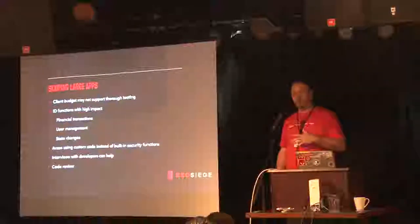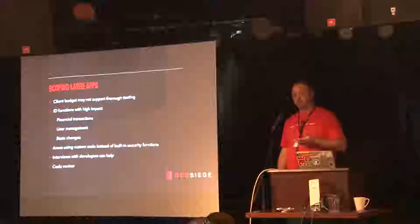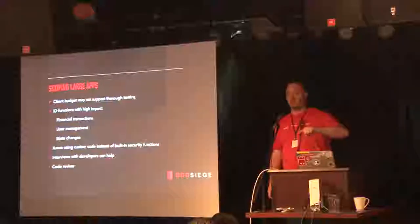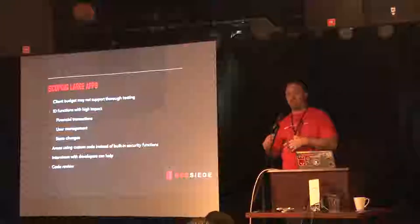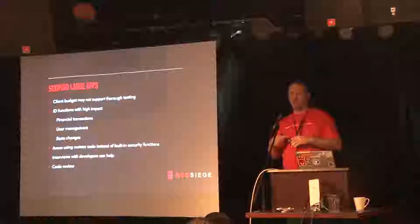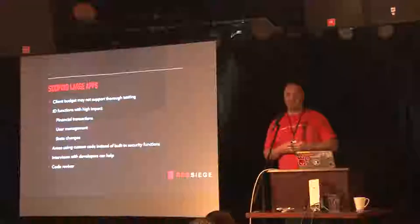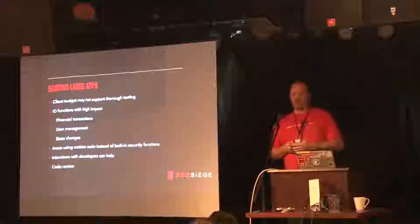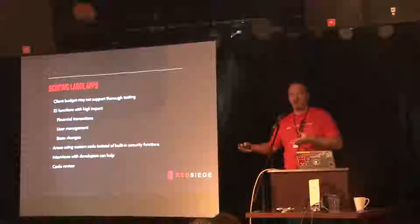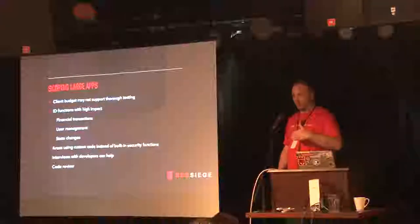If you have development skills and can bring code reviews to the table, ask for a copy of the source code. That will help you find areas to target, and during dynamic testing if you think you have a vulnerability you can go right back to the source and find out if it's actually exploitable. If you don't have that skill set, ask if they've done a code audit — something like IBM Rational or a static source code analysis tool. Ask if you can see the results, as that'll help inform your testing.